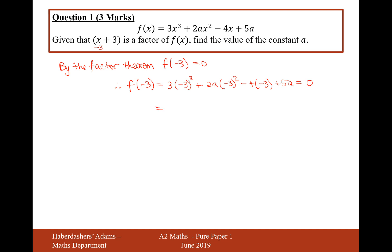So, -3 to the power of 3 is -27, times 3 is -81, and then we have 18a, add 12, add 5a. That will equal 0. So now let's tidy this up.